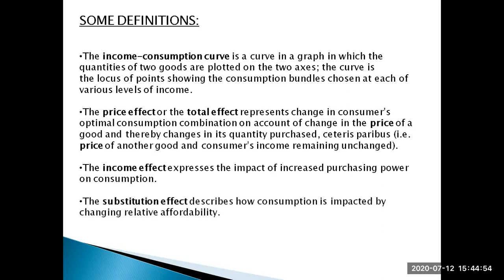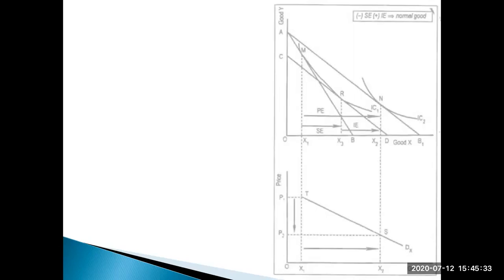The other part of the total effect is the substitution effect, which describes how consumption is impacted by changing relative affordability. When one good becomes cheaper relative to another, you might buy more of the cheaper good — or, if different goods are involved, you might drop consumption of the cheaper good entirely. This part, which considers changing relative affordability of two goods, is the substitution effect. So total effect is divided into income effect and substitution effect.